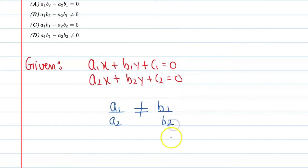Okay, this condition should be there, then you can say that the given pair of system of equations has unique solutions. So if you cross multiply this and simplify it a little,